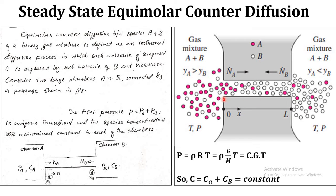The concentrations of species are maintained constant in each reservoir such that yA0, the mole fraction of species A at one point, is greater than the mole fraction of species A at the other point. Similarly, yB0, the mole fraction of species B, is less at the first point than at the second. So there is a concentration difference. Because of these concentration gradients, species A diffuses in the positive x direction and B in the opposite direction.